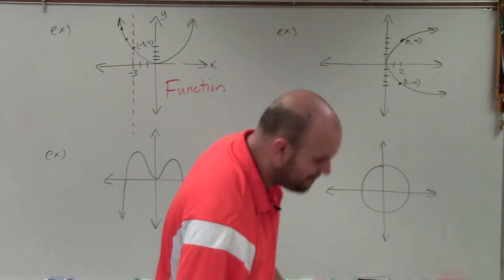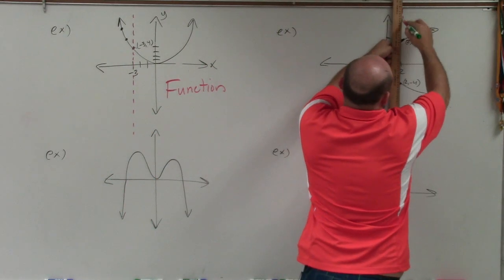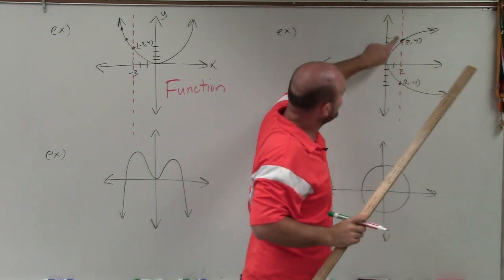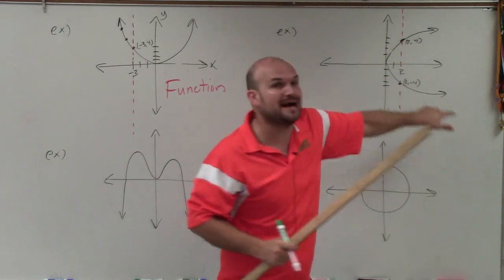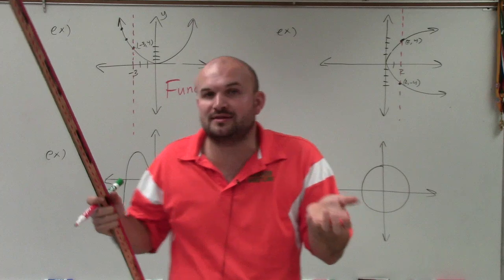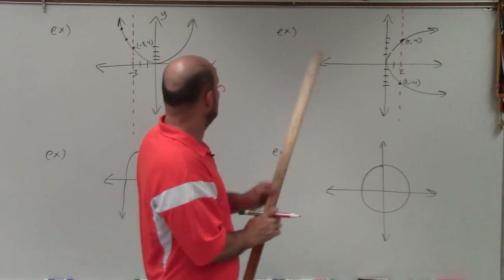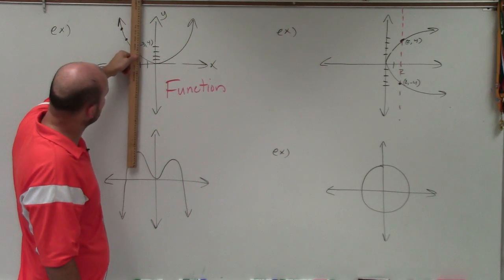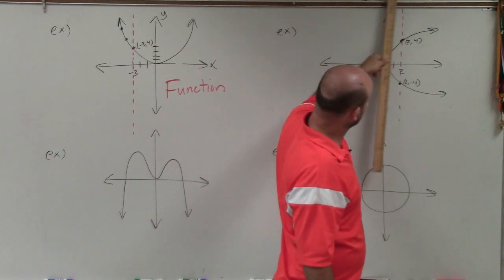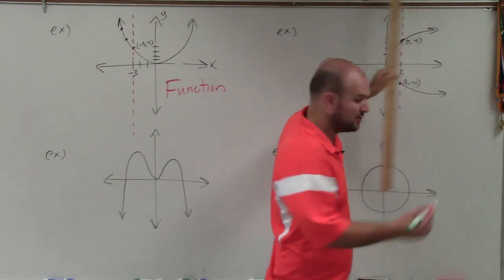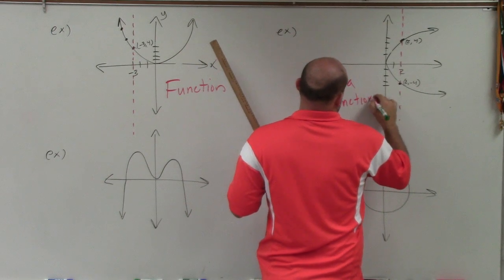You can show that by using the vertical line again. If I was going to take a vertical line at 2, you can see that my vertical line crosses my graph twice. So therefore, 2 maps to not only 4, but it maps to negative 4. So if we were to do this with the coordinate points, this would not be a function. So the easy way to tell using the vertical line test is to just take a vertical line, and if the vertical line crosses your function only once, it's a function. If your vertical line crosses your function more than once, then it is not a function.